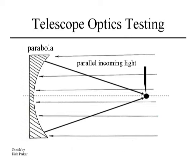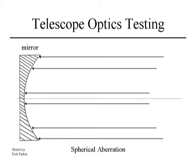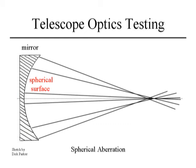Suppose parallel light hits a spherical surface instead of a parabolic one. A spherical surface is a little too curved at the edges and too flat in the center. Light striking the edge of the mirror focuses closer to the mirror, while light reflecting from the center focuses farther away — so we don't have a good focus. A spherical surface will not focus light from an infinite source into a single unique focus; the light must originate at the center of curvature to get a unique focus with a sphere. This aberration to the wavefront is called spherical aberration, and it's the primary aberration we check for and correct when parabolizing the mirror.